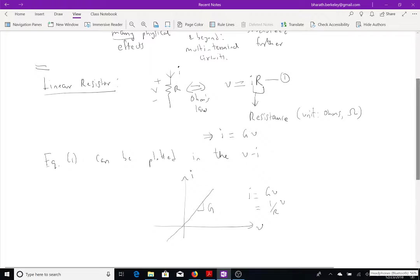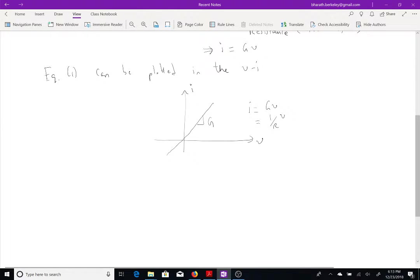Now, there are two special cases of linear resistors. Two special cases, are what is called as the open circuit, which is basically R going to infinity, that is, so if R is going to infinity, so the current is identically 0. So open circuit R going to infinity, in other words, that's why I was getting confused, because I plotted this wrong.